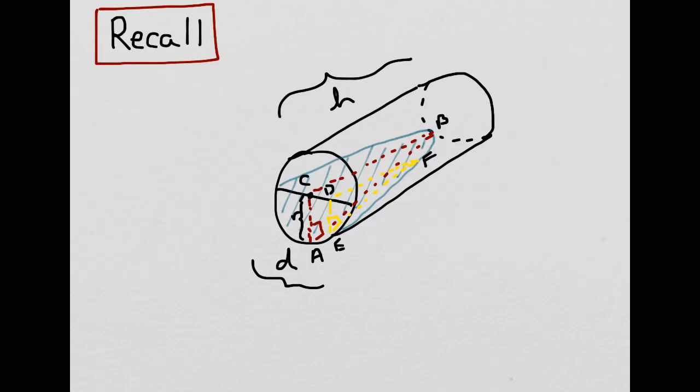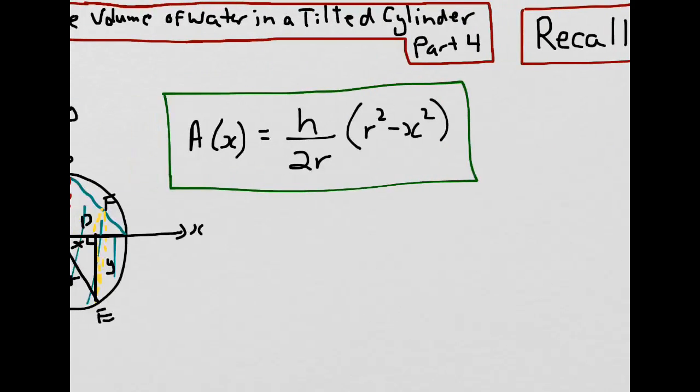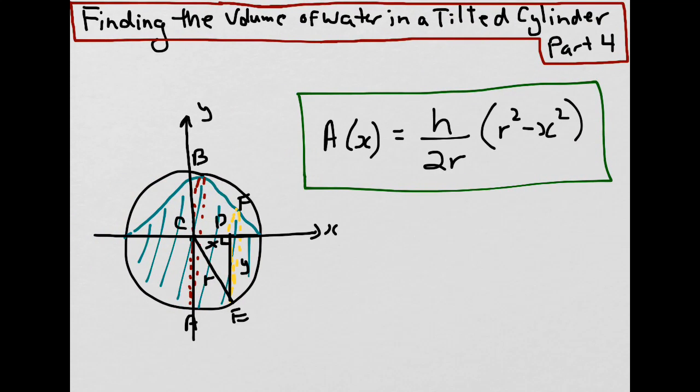In calculus terms, we can write this as follows: the volume will equal the integral from a to b, where the far left is a and the far right is b of the diameter of the cylinder, of the area function with respect to x.